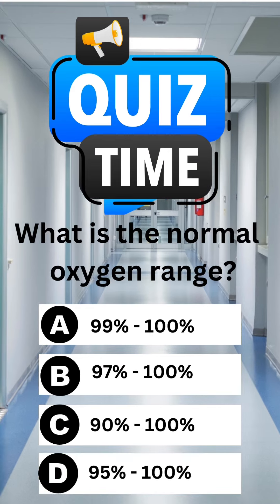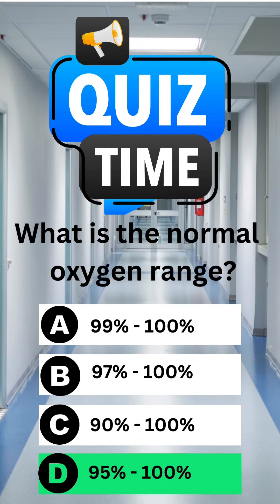What is the normal oxygen range? A. 99% to 100%. B. 97% to 100%. C. 90% to 100%. D. 95% to 100%. The correct answer is D. 95% to 100%.